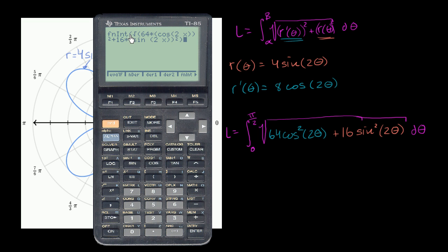That closes what I'm taking the square root of. Then comma, the variable I'm integrating with respect to is x — everywhere I had theta, I'm replacing with x. And I want to do it from x equals zero to x equals pi over two. Hopefully I haven't made a mistake typing this in. After it finishes calculating, we get — rounding to the nearest thousandth — 9.688.